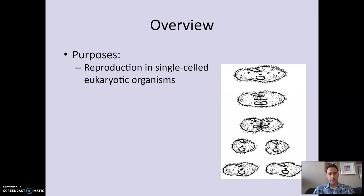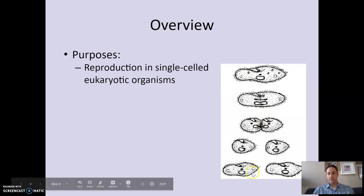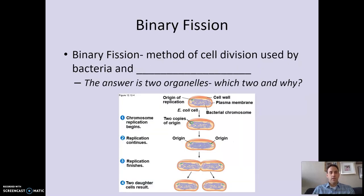If you're a single-celled organism, cell division may be how you reproduce. Some eukaryotic cells simply reproduce by cell division — one cell splits into two, and that's how they make offspring.